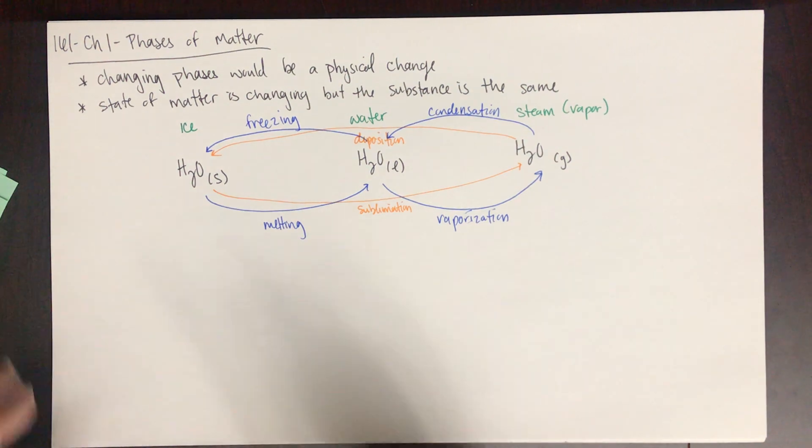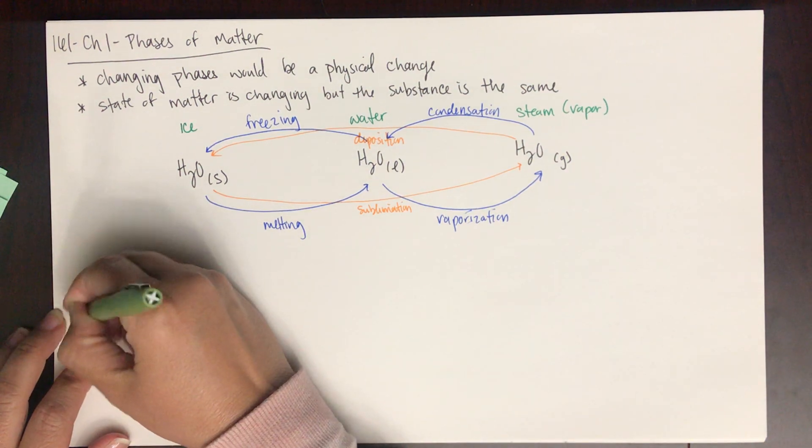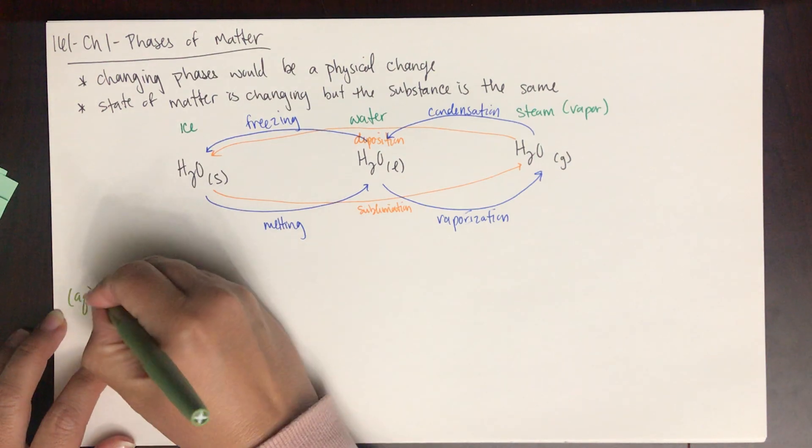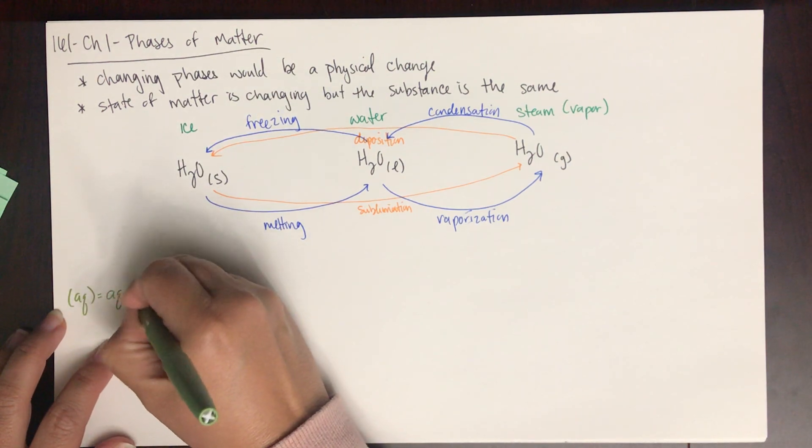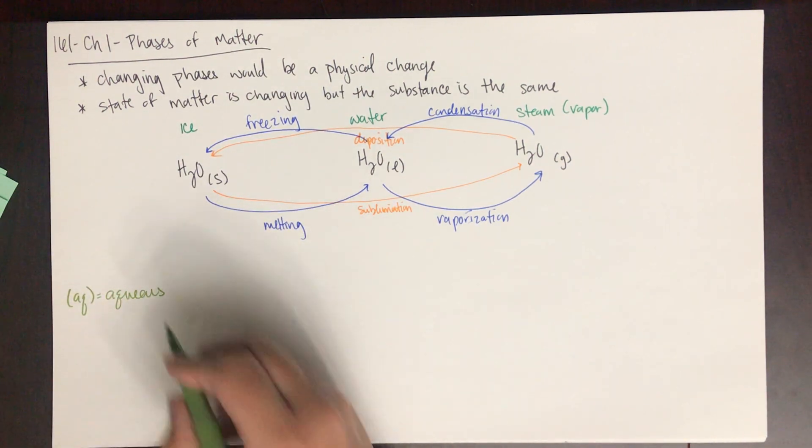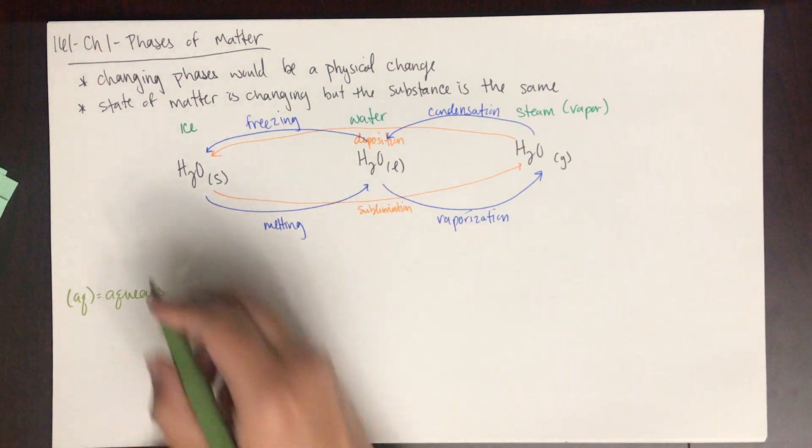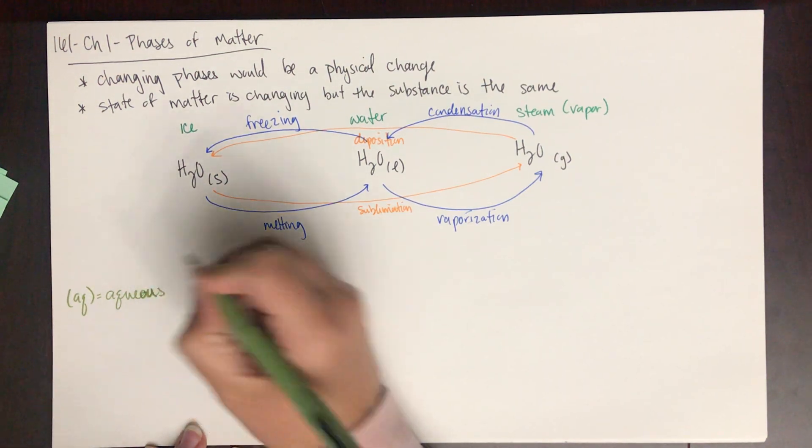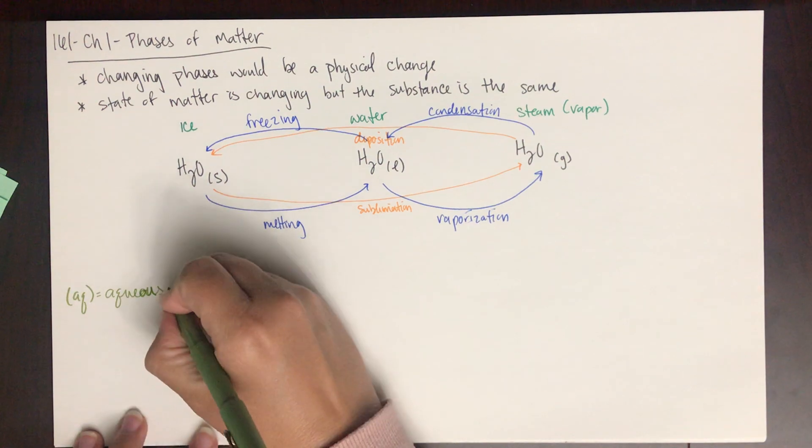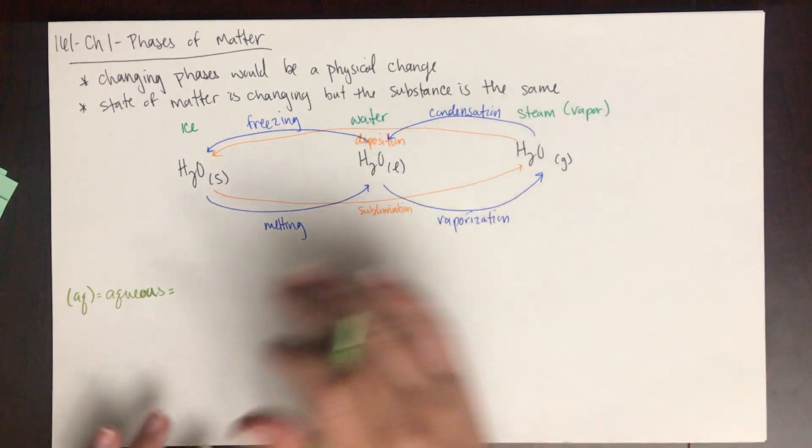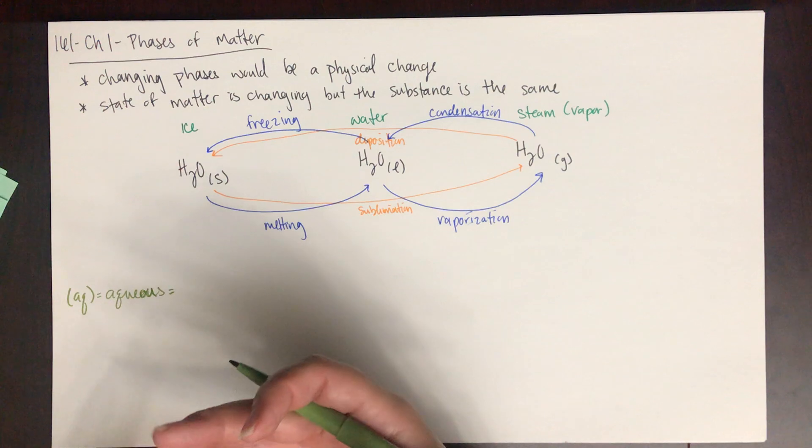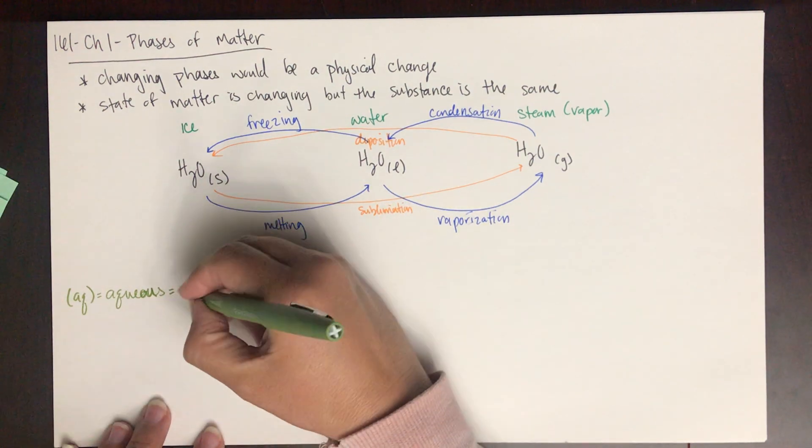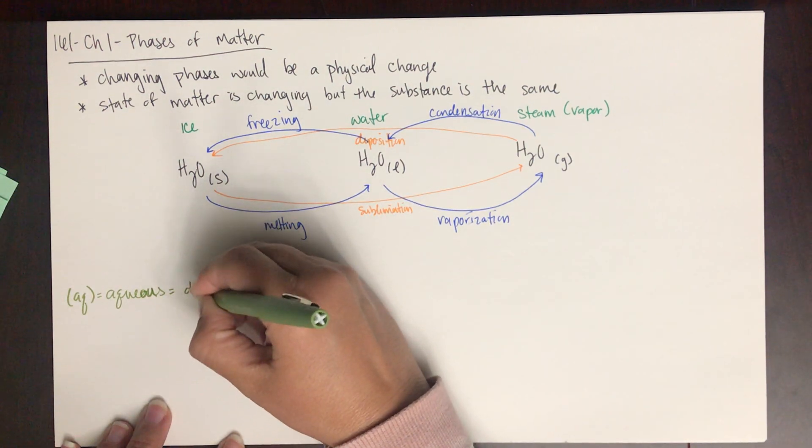Another thing you're going to see when we're writing chemical equations is 'aq'. Aq stands for aqueous, A-Q-U-E-O-U-S. What aqueous means is that a solid or even another liquid has been dissolved in water.